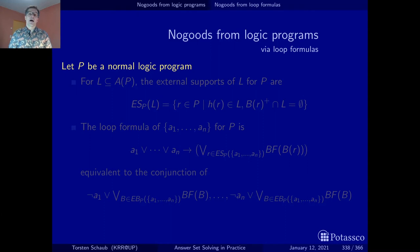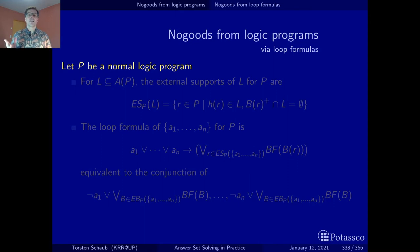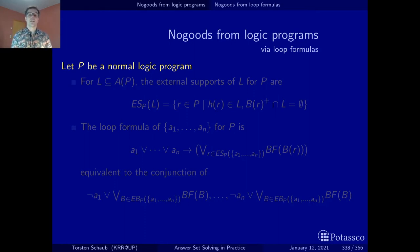What is much more important than loops and loop formulas is this notion of external support. Whenever you have an atom or a set of atoms, they are good provided there is an external support for these atoms. Because once there is no external support, you risk having circular derivations. Accordingly, these are the key concepts we look at now.